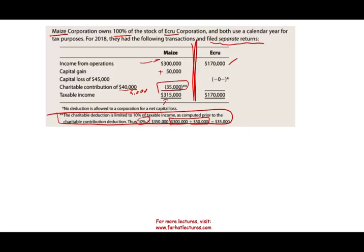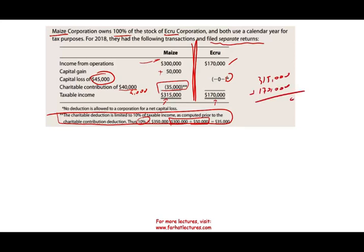eCrew has income from operations of $170,000. They have a capital loss of $45,000 — not allowed, because you can only deduct capital losses up to the extent of capital gains. So their taxable income is $170,000. Combined, if they file separately, their total taxable income is $315,000 plus $170,000 = $485,000. Let's see what happens if they file a consolidated return.